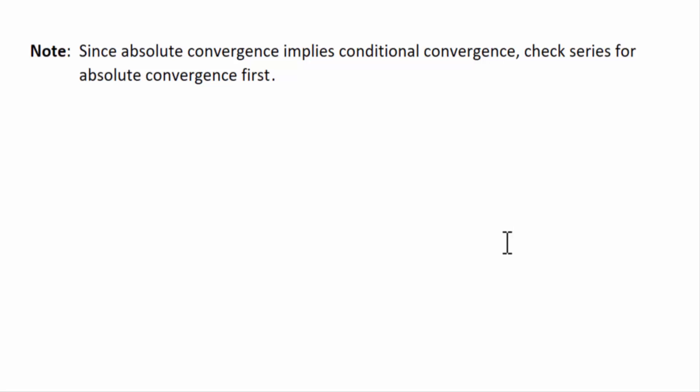Well, in many cases, it makes sense to check for absolute convergence first. That's what the note is saying. Because absolute convergence implies conditional convergence. Now, be aware, in many cases, the terms in the series are positive, so this is moot.